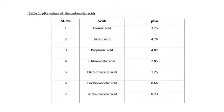Chloroacetic acid has a pKa of 2.85, dichloroacetic acid 1.25, trichloroacetic acid 0.66, and trifluoroacetic acid 0.23. From the table, we observe that formic acid is more acidic than acetic acid. This is because in acetic acid we have a CH3 group, which is an electron-releasing group. The presence of an electron-releasing group decreases the acidic strength. As we come to propionic acid, the pKa value increases because the alkyl group attached to the carbonyl carbon is the ethyl group, which is larger than that in acetic acid.